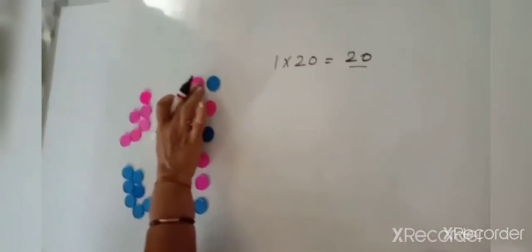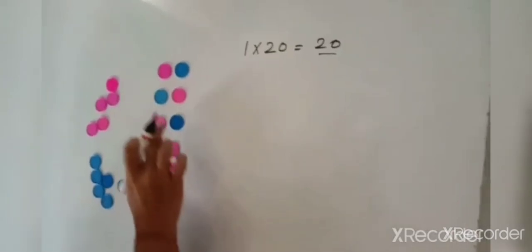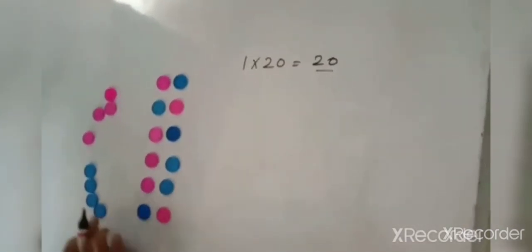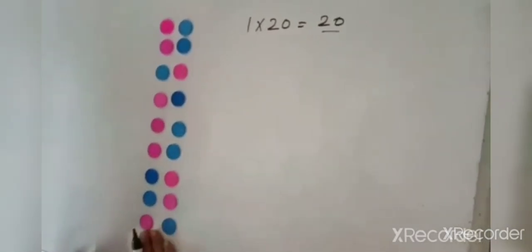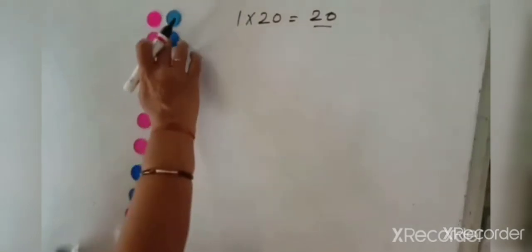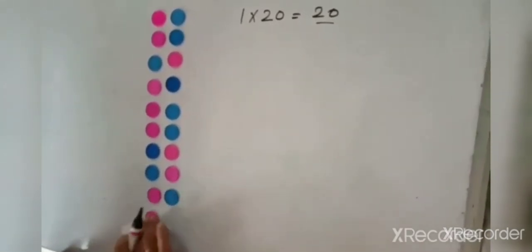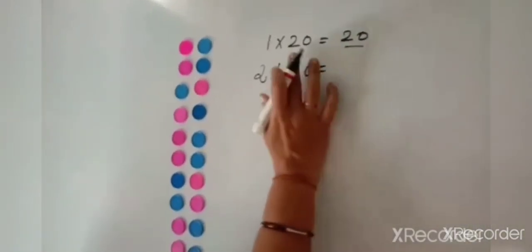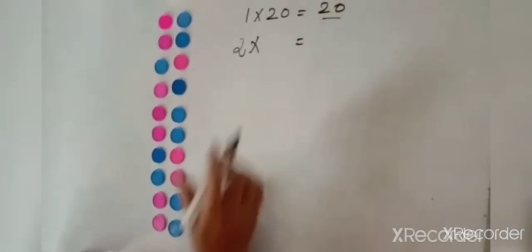Now with the same coins, if I arrange two coins in each row, how many rows will I be getting? I will be getting 10 rows — 1, 2, 3, 4, 5, 6, 7, 8, 9, and 10 with no coins left. So that means the number 20 is completely divisible by 2.